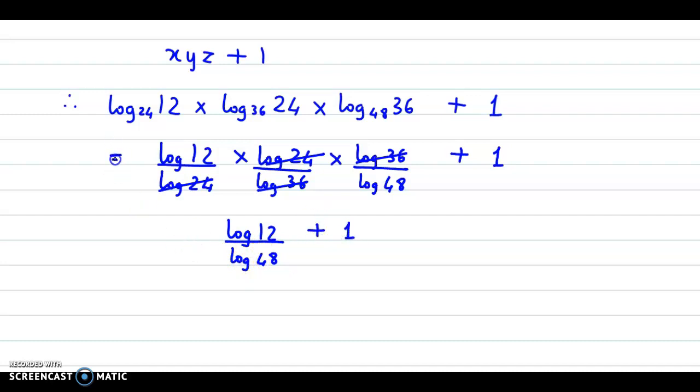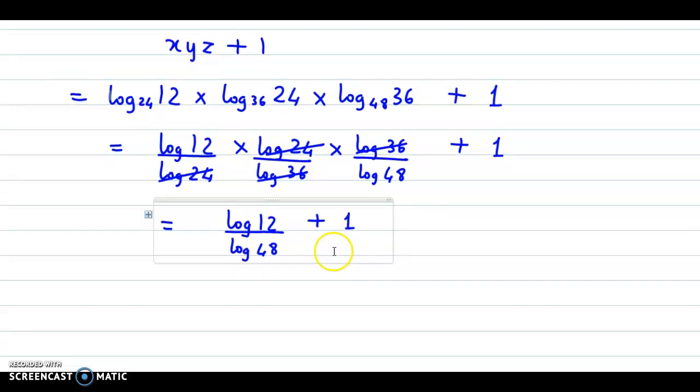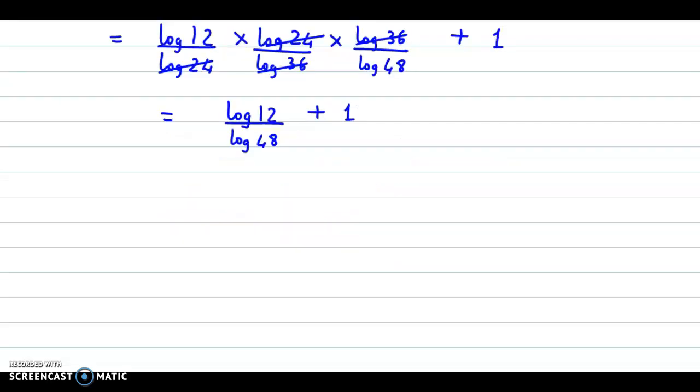Now we equalize this. Equalizing the denominator, let's see what we get. We have log of 12 plus log of 48, divided by log of 48.